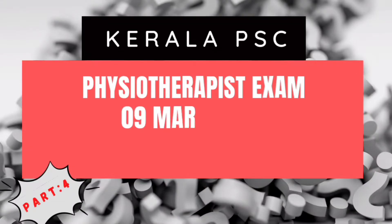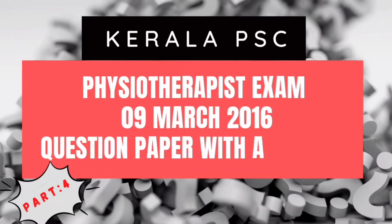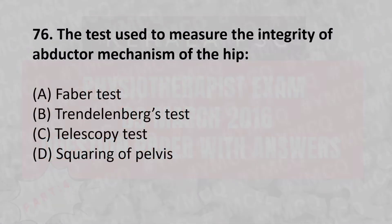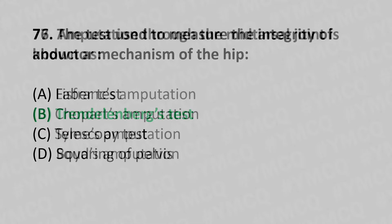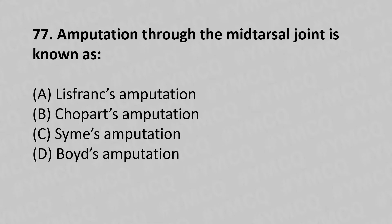Hello, welcome to Part 4 of the series. Let's move to our 76th question. The test used to measure the integrity of the abductor mechanism of the hip: option A Faber's test, option B Trendelenburg test, option C telescopic test, option D squaring of pelvis. The answer is option B, Trendelenburg test.